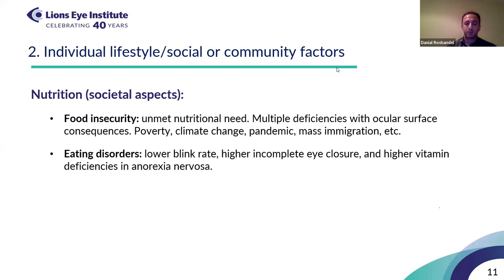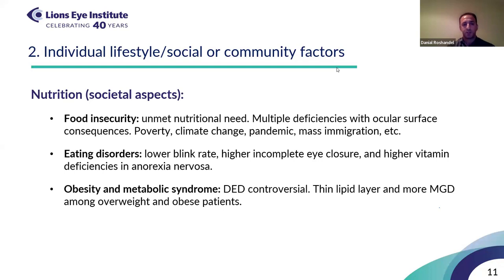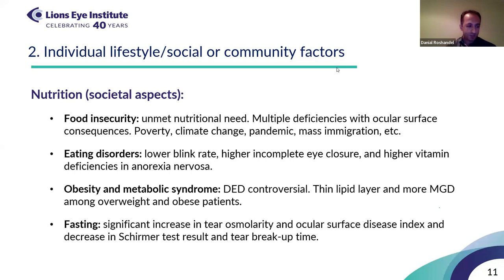Anorexia nervosa is common among young individuals, especially females, and has been associated with lower blink rate, higher complete eye closure, and vitamin deficiencies that can cause eye surface problems. The effect of obesity and metabolic syndrome on the ocular surface was controversial, although obesity can be associated with a thinner lipid layer and more meibomian gland dysfunction, but the rate of dry eye disease was not higher in this group. Religious fasting was associated with a significant increase in tear osmolarity and ocular surface disease index, and a decrease in Schirmer test results and tear breakup time, whereas intermittent fasting for diet purposes did not show these signs.